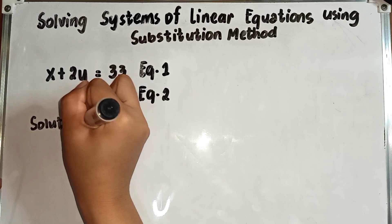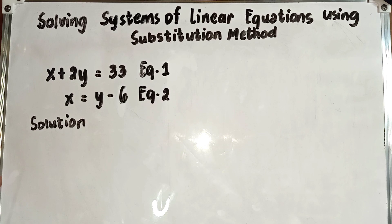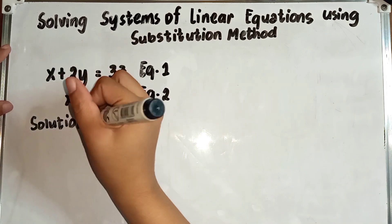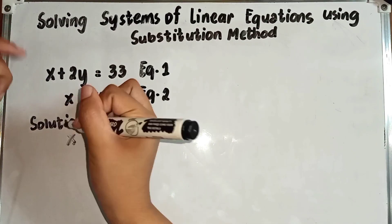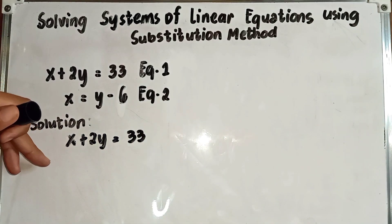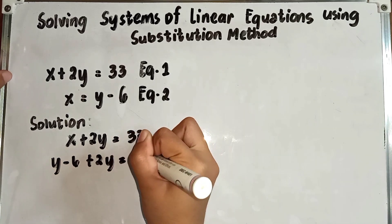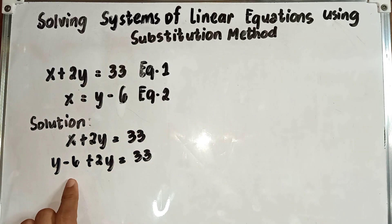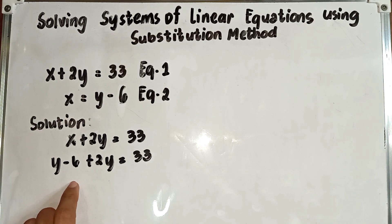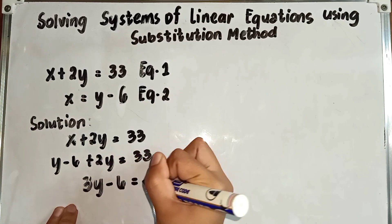Since equation 2 says x is equivalent to y minus 6, we are going to substitute y minus 6 for x in the first equation in order to find the value of y. So we have x plus 2y equals 33. Substituting, we get y minus 6 plus 2y is equal to 33. We then combine like terms: y plus 2y gives us 3y, so 3y minus 6 is equal to 33.